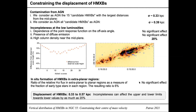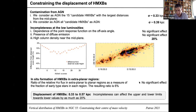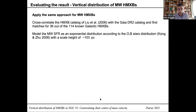In the end, the displacement of high mass X-ray binaries is confined between 0.33 and 0.75 kiloparsecs, with incompleteness — mainly the high column density — able to affect both results by as much as 20%.